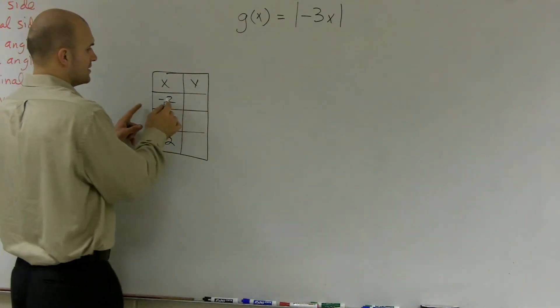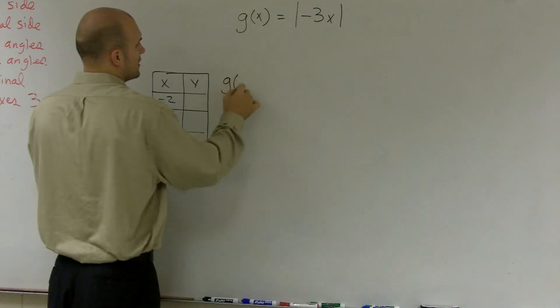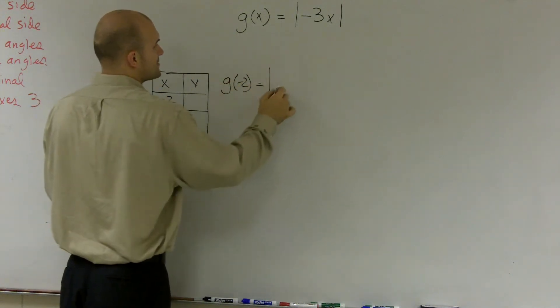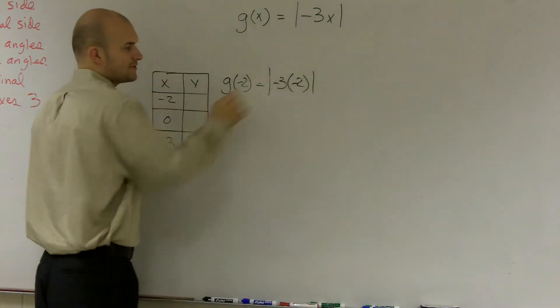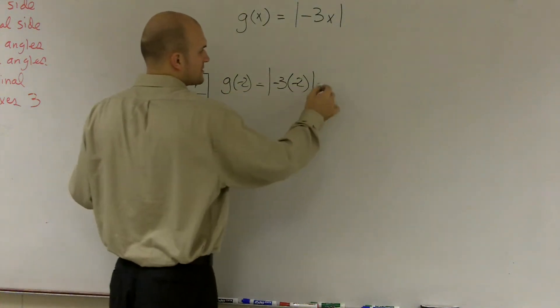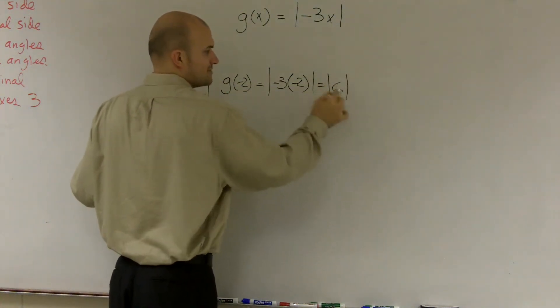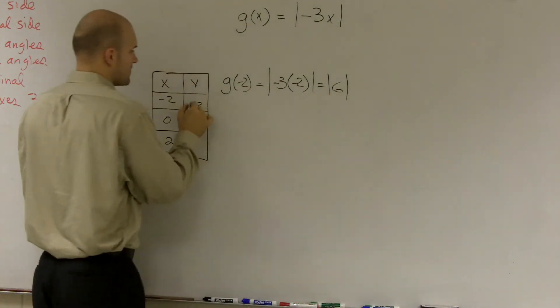So when I plug in negative 2, I have g of negative 2 equals absolute value of negative 3 times negative 2. Well, negative 3 times negative 2 is positive 6. Absolute value of positive 6 equals 6.